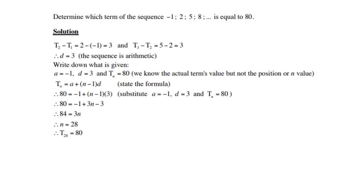Let's look at another example: determine which term of the sequence negative 1, 2, 5, and 8 is equal to 80. Let's first see if this is arithmetic, so what is 2 minus a negative 1, what is 5 minus 2, and what is 8 minus 5. In all three cases, the answer is 3, so the common difference is 3, so therefore, it is arithmetic. So write down your formula then, A plus (N minus 1)D, but remember now, the term 80 is given, so therefore, Tₙ becomes 80.